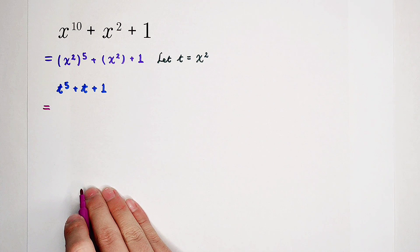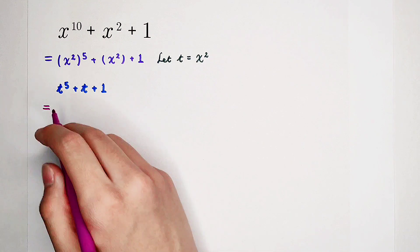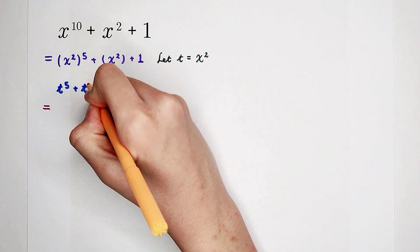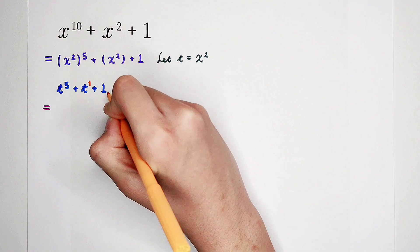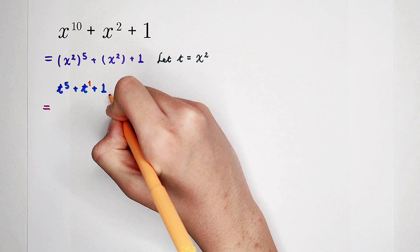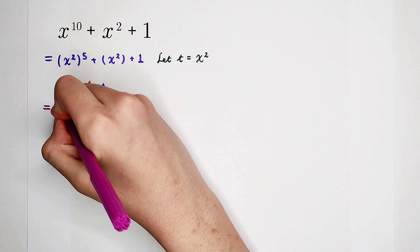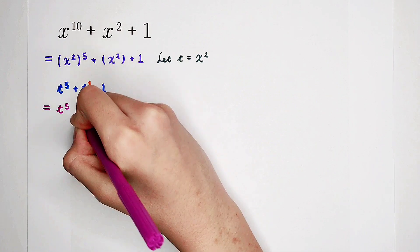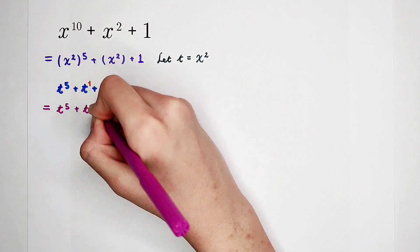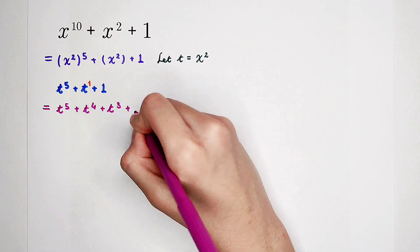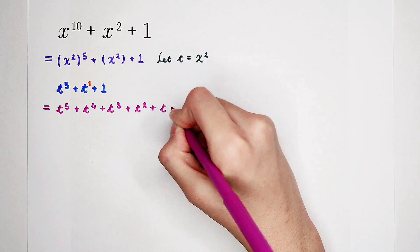Maybe, which method should we use? Look: t to the power of 5, here is t to the power of 1, and 1 can be regarded as t to the power of 0. So we have exponents 5, 1, 0 — we lack 4, 3, and 2. So now we can add them here: t to the power of 5, plus t to the power of 4, plus t cubed, plus t squared, plus t, plus 1.